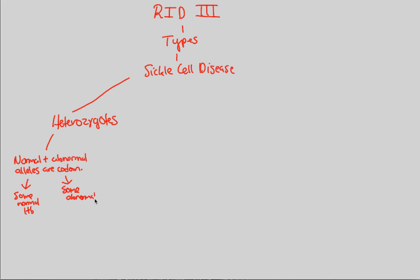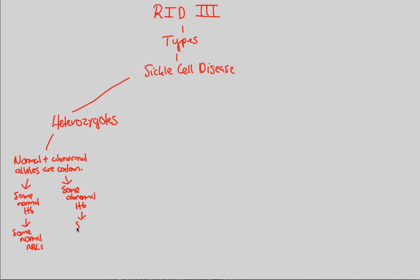This is actually the first time we're seeing codominance in this course — some normal hemoglobin, some abnormal hemoglobin. This means they have some normal red blood cells, because hemoglobin is a part of red blood cells, and they'll also have some abnormal RBCs. These abnormal ones are known as the sickle cells, because they are crescent-shaped.